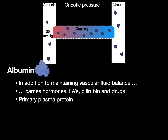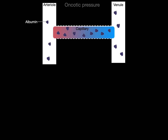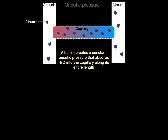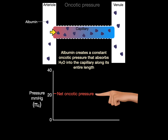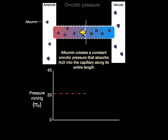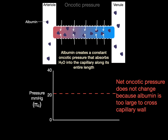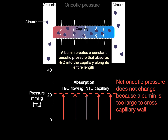Albumin is a primary plasma protein produced by hepatocytes, and it creates a constant oncotic pressure that absorbs water into the capillary along its entire length from arterial to venous end. On the graph, the red line representing net oncotic pressure does not change as we go from left to right, because albumin is too large to cross the capillary wall. The upward arrows show water flowing into the capillary consistently from arterial to venous end.